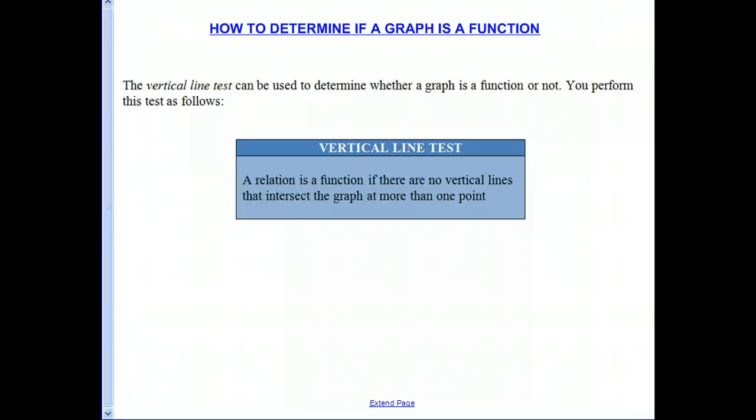And the vertical line test can be used to determine whether the graph is a function or not. So basically, it says a relation is a function if there are no vertical lines that intersect the graph at more than one point.